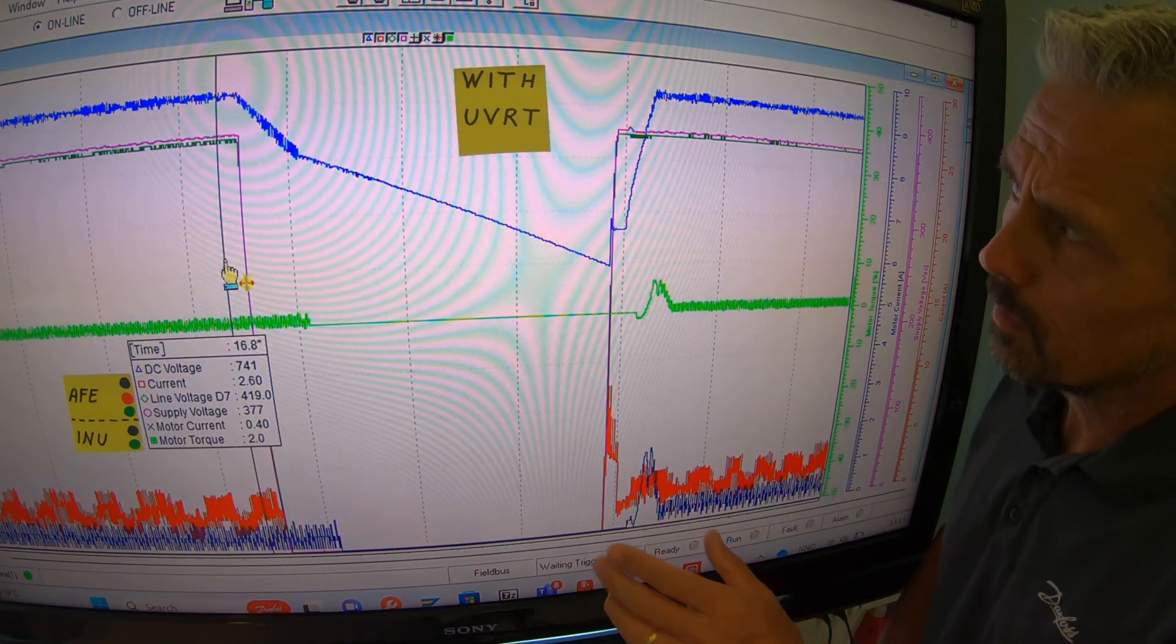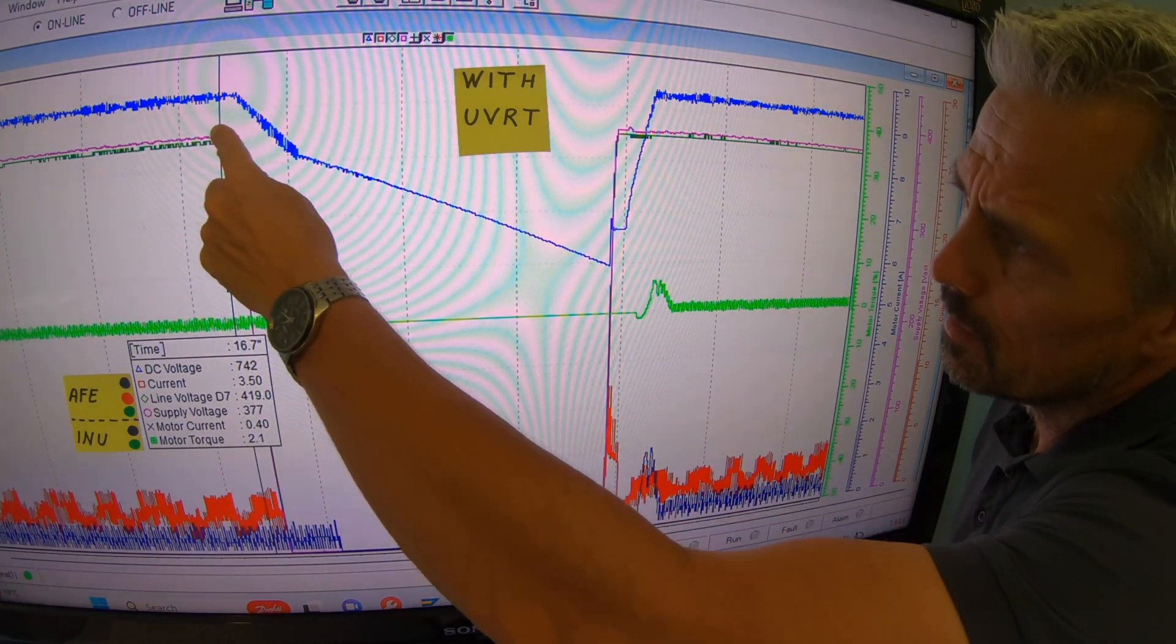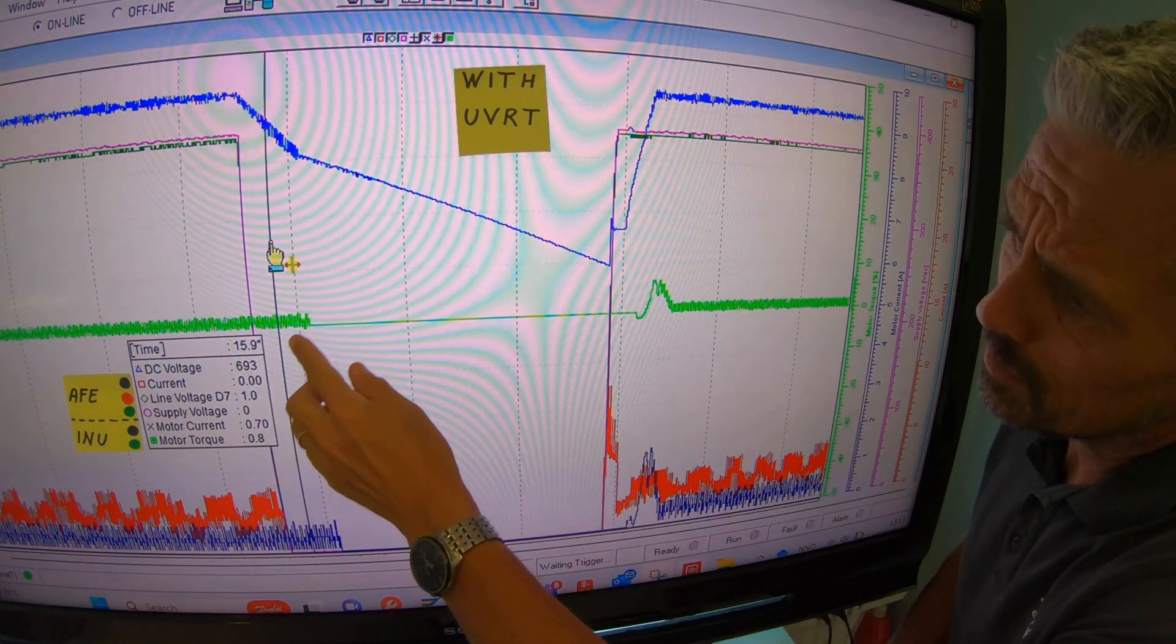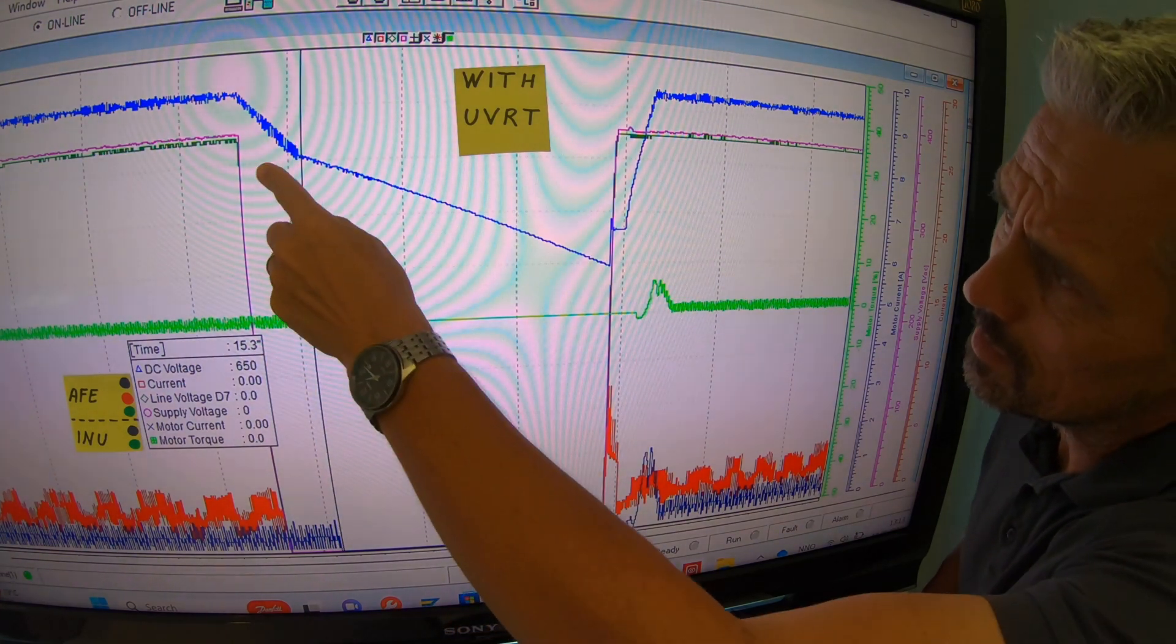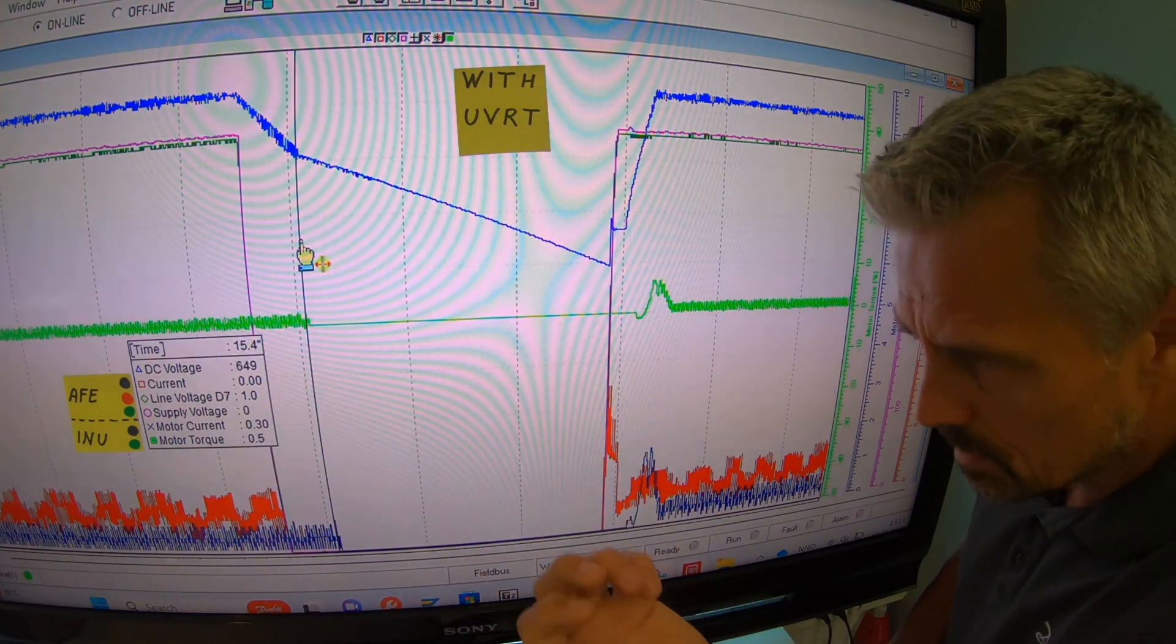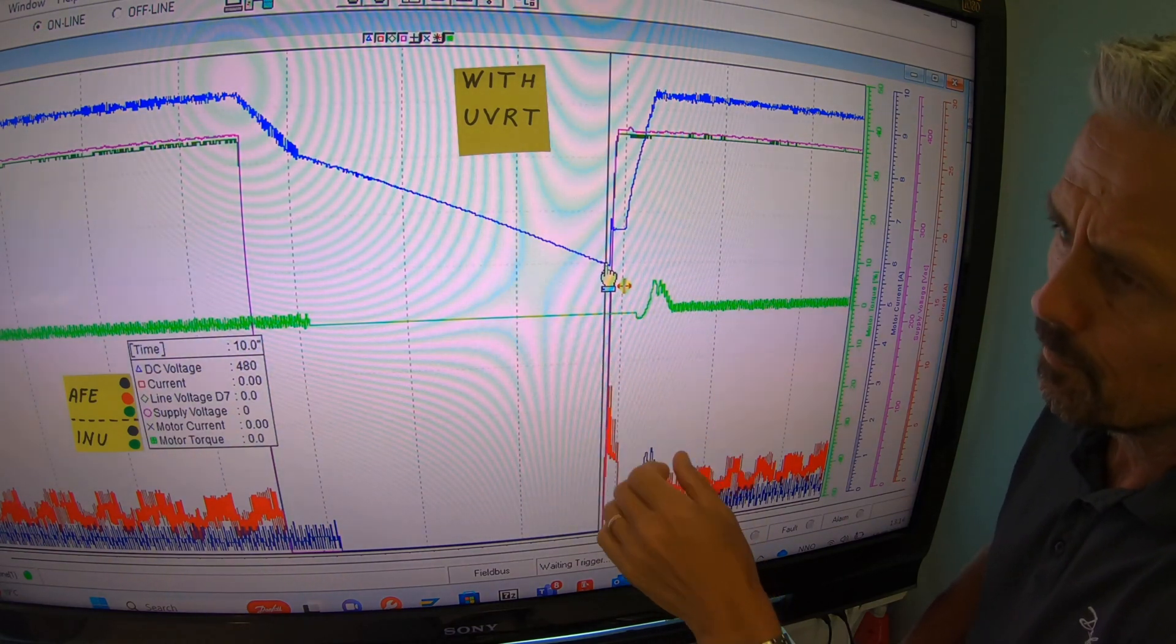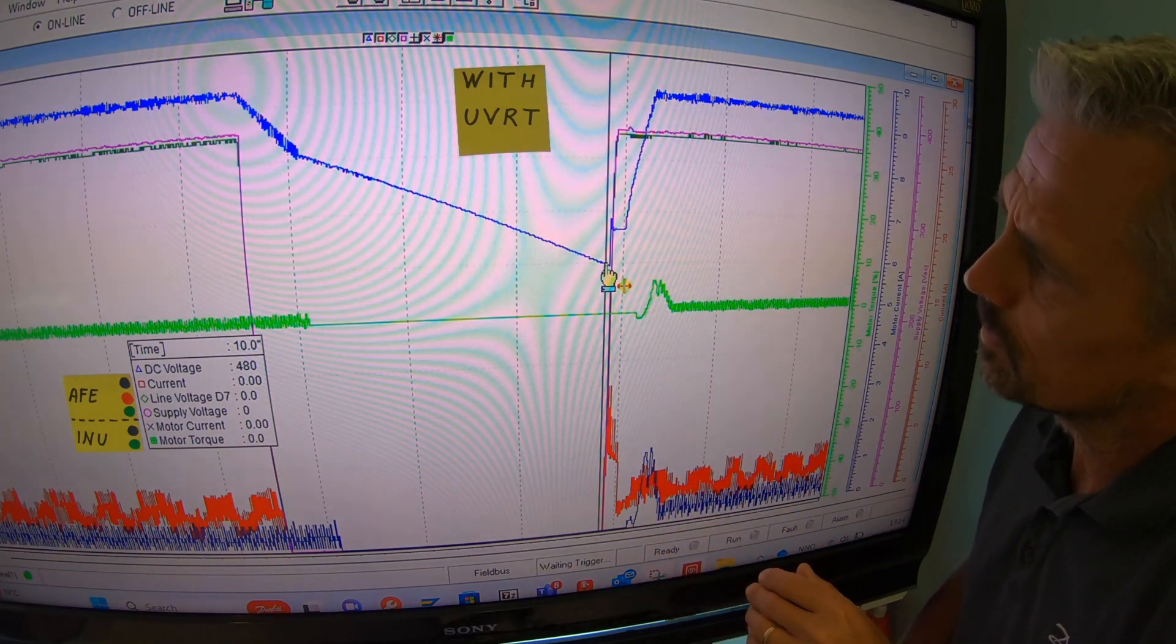This is the behavior with the undervoltage ride-through activated. We see that when the ship AC grid drops. The DC voltage is dropping and the consumers still extract energy, but only down to DC voltage level 650 volts, which we decided. Then it quits. Doesn't extract energy from the DC bus. Now we preserve the DC bus as long as possible. All the way down here. And still it is above trip level and the voltage to trip level of the drives.